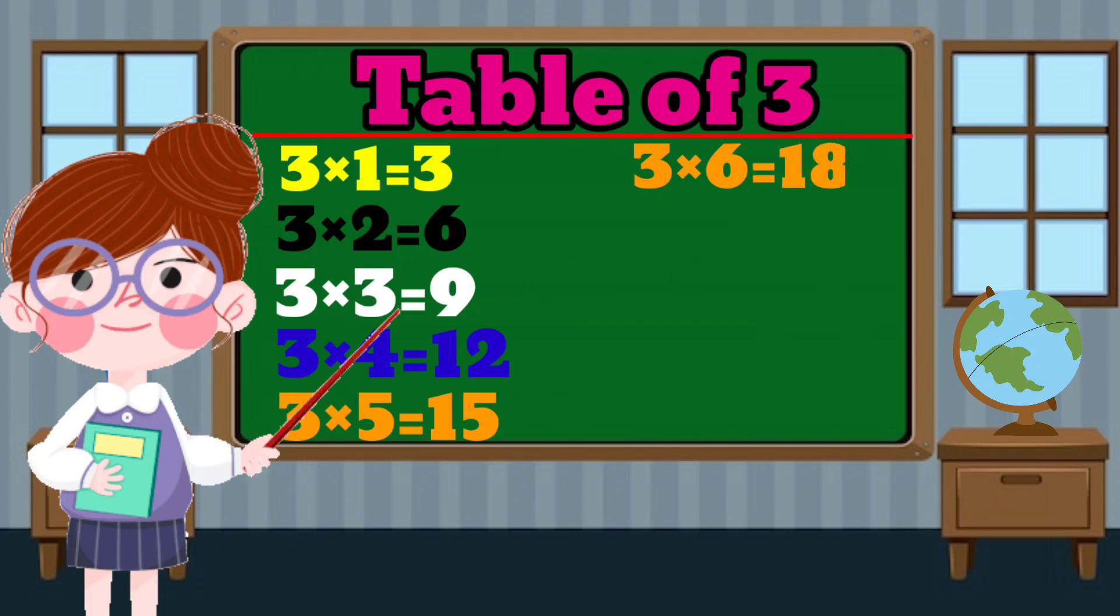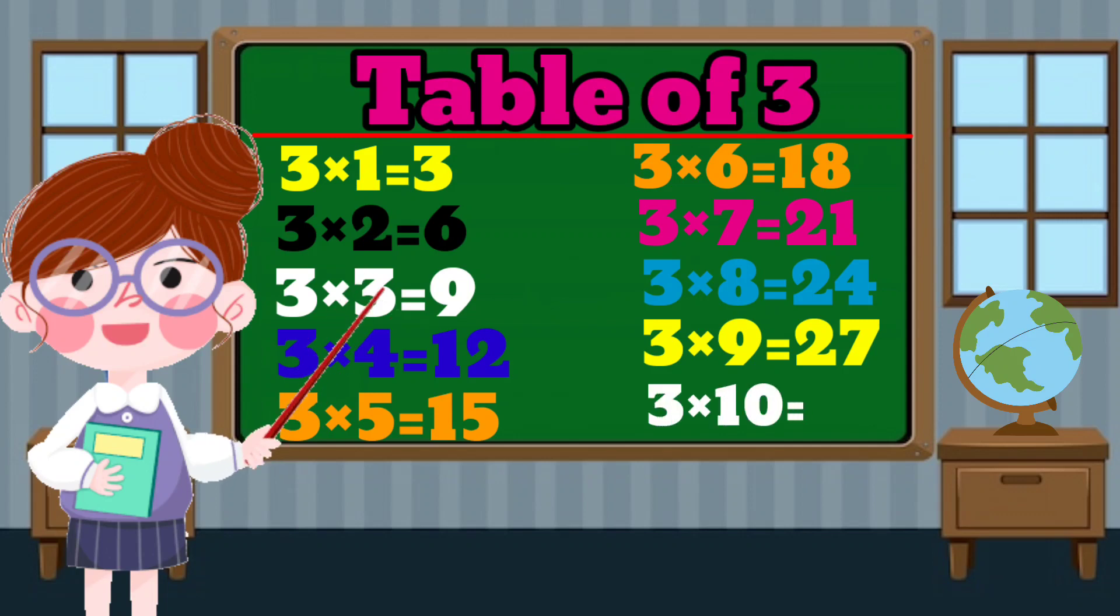3 times 6 equals 18. 3 times 7 equals 21. 3 times 8 equals 24. 3 times 9 equals 27. 3 times 10 equals 30.